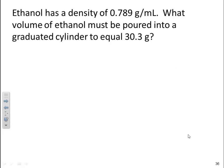Here's another example. Ethanol has a density of 0.789 grams per milliliter. What volume of ethanol must be poured into a graduated cylinder to equal 30.3 grams? Well, here we can use the formula and directly calculate our answer or just following units. We can figure out the answer, which we talk more about at the end of this slide.